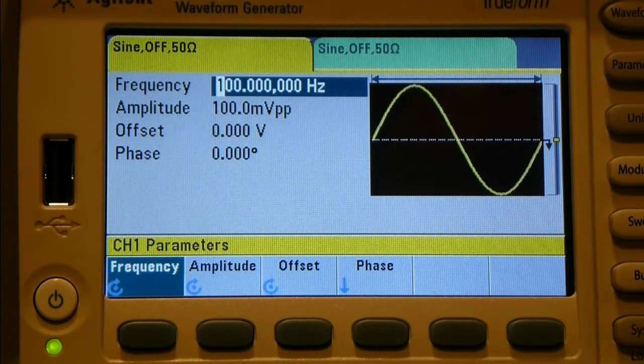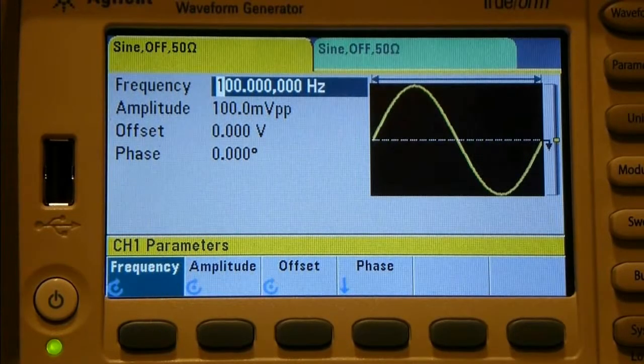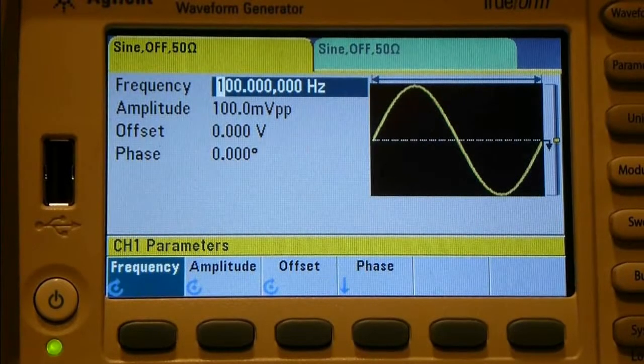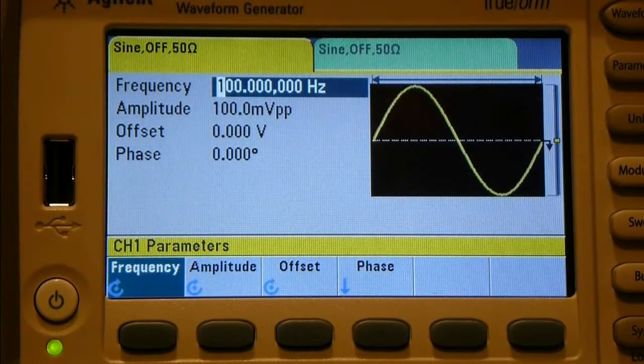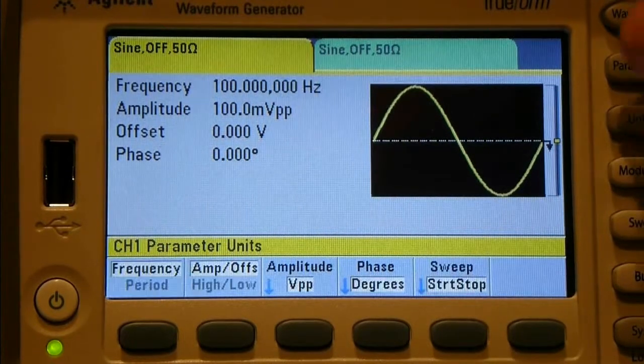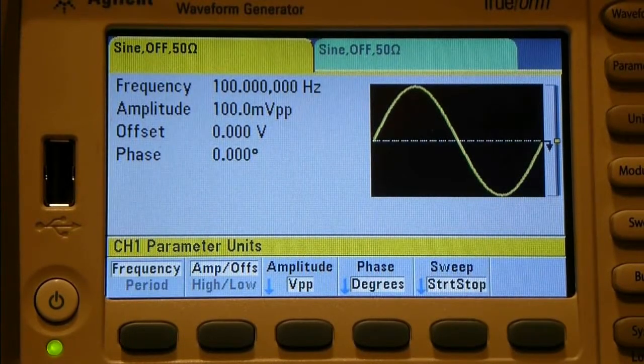Pushing the parameters button allows you to get directly back to the parameter settings so that you can tweak. If I had this turned on right now and was outputting a signal, I can actually just press one button and then start adjusting the frequency of the output, which is kind of cool.